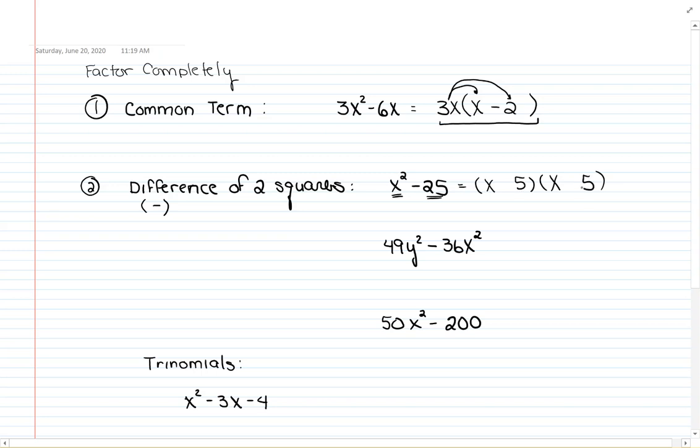And then to multiply and get a negative number, one has to be positive and the other number has to be negative. It doesn't matter which one you put first as negative or positive, just as long as the signs are opposites.